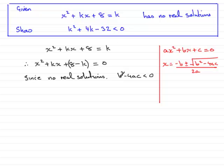So what is b? b is the coefficient of x. And in this example, it's the k. So therefore I can say that k squared for the b squared, then we have minus 4ac, so that's minus 4 times a.